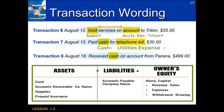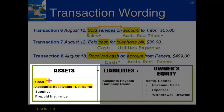Transaction eight on August 18th: received cash on account from Panera for $499. My first keyword is 'cash,' which matches the cash account. My second keyword is 'account' with its buddy 'received,' matching accounts receivable Panera. Receiving cash is a plus. Since I have two asset accounts that need to stay in balance, I increase cash and decrease accounts receivable — Panera has paid off a portion of their bill, so they owe less.